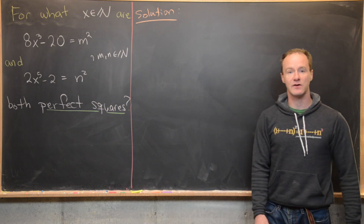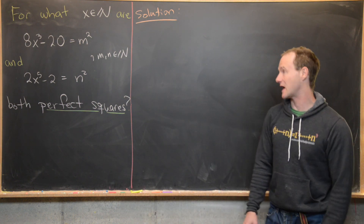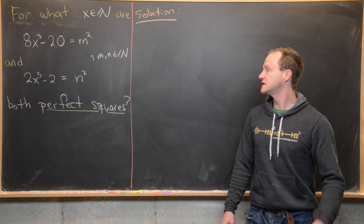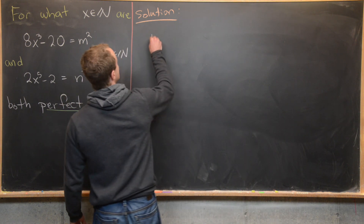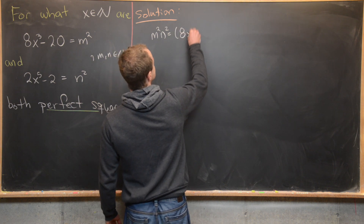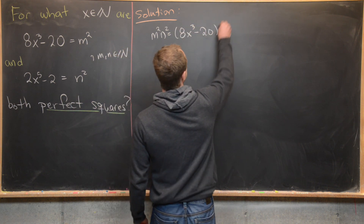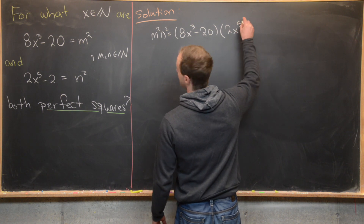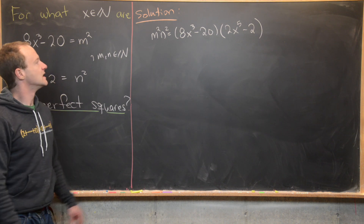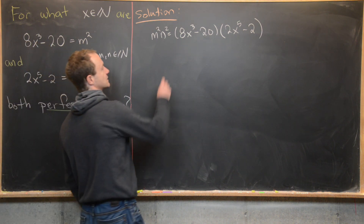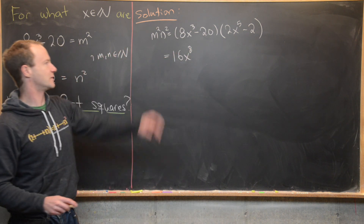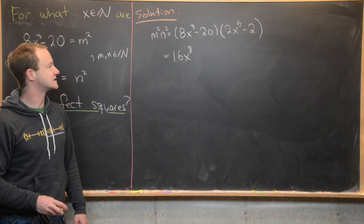Next, what we want to do is multiply m² and n². That's the same thing as multiplying the left-hand sides, so m²n² equals (8x³ minus 20)(2x⁵ minus 2). Now we'll multiply that out. That gives us 16x⁸ — from 8x³ times 2x⁵.